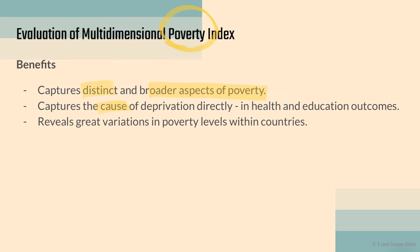Things like lacking health or living standards are what MPI captures as causes of poverty. Additionally, MPI reveals great variation in poverty levels within countries. For instance, a city like Nairobi could have a higher MPI compared to another city within Africa. This allows you to assess which areas are lacking in health, education, or living standards, making MPI a good tool for comparison.